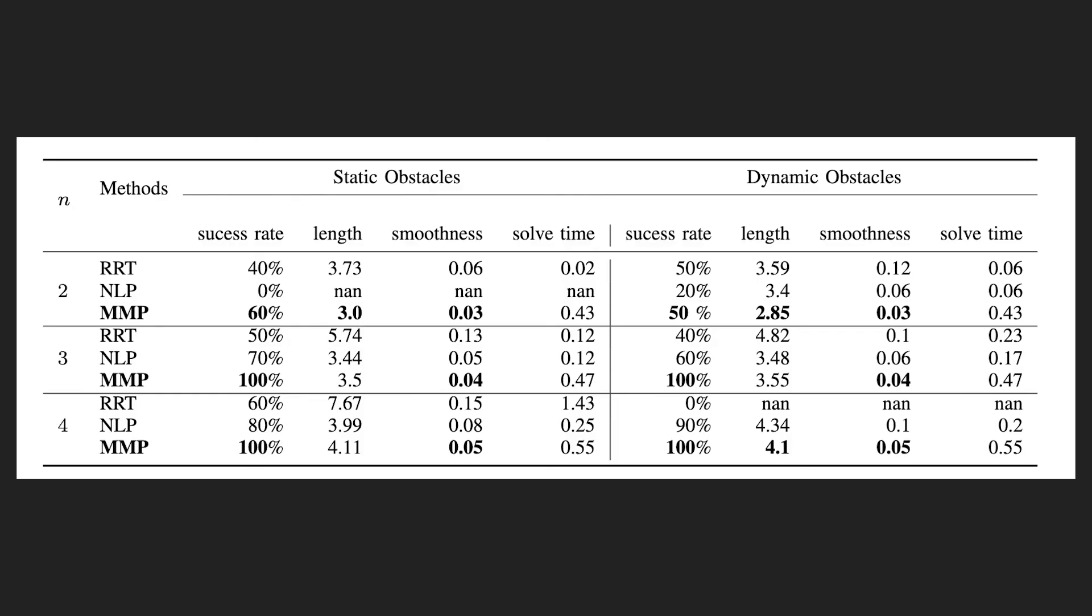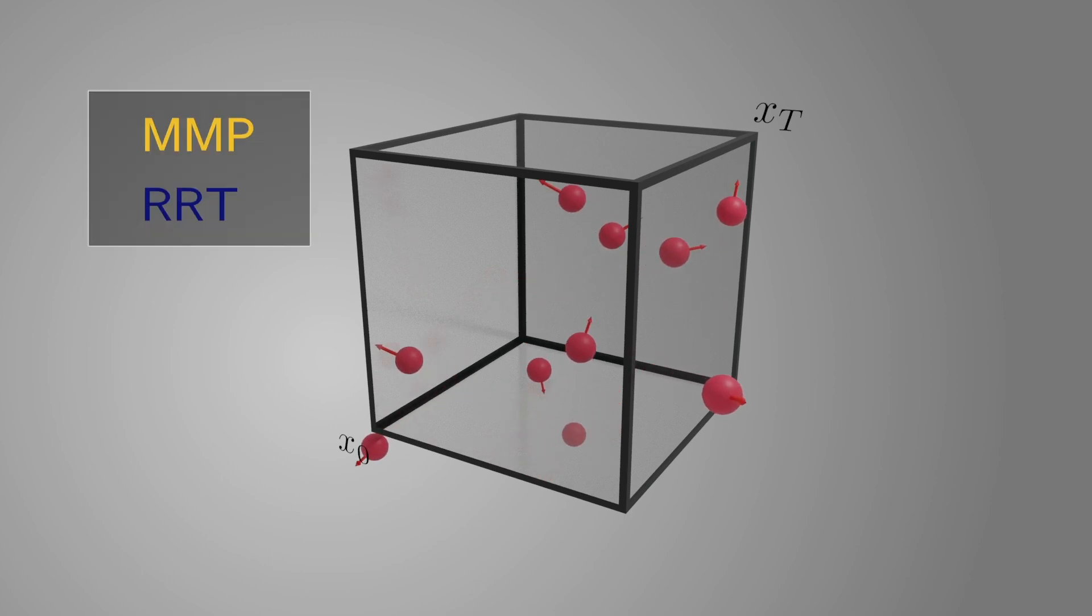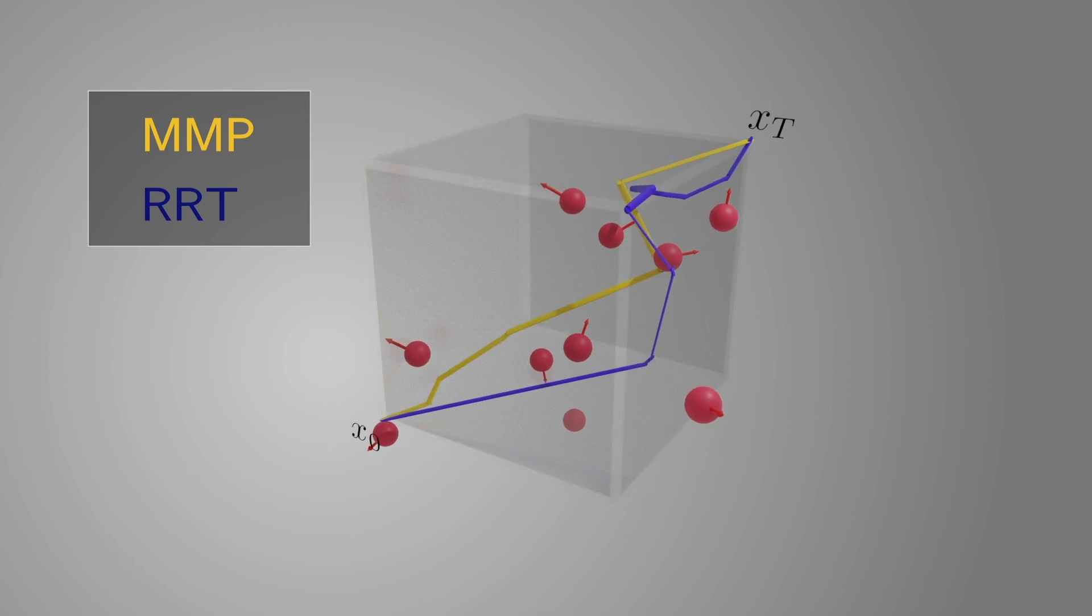On several benchmarks, our approach outperforms several competing methods on both the quality and the length of the paths produced. Here, for instance, the configuration space is the unit box in 3D, and there are 10 sphere-based obstacles that are moving with random velocities. RRT finds a feasible path, but this path is unnecessarily jerky. Our approach succeeds in finding a piecewise linear path with 10 segments that is both shorter and smoother.